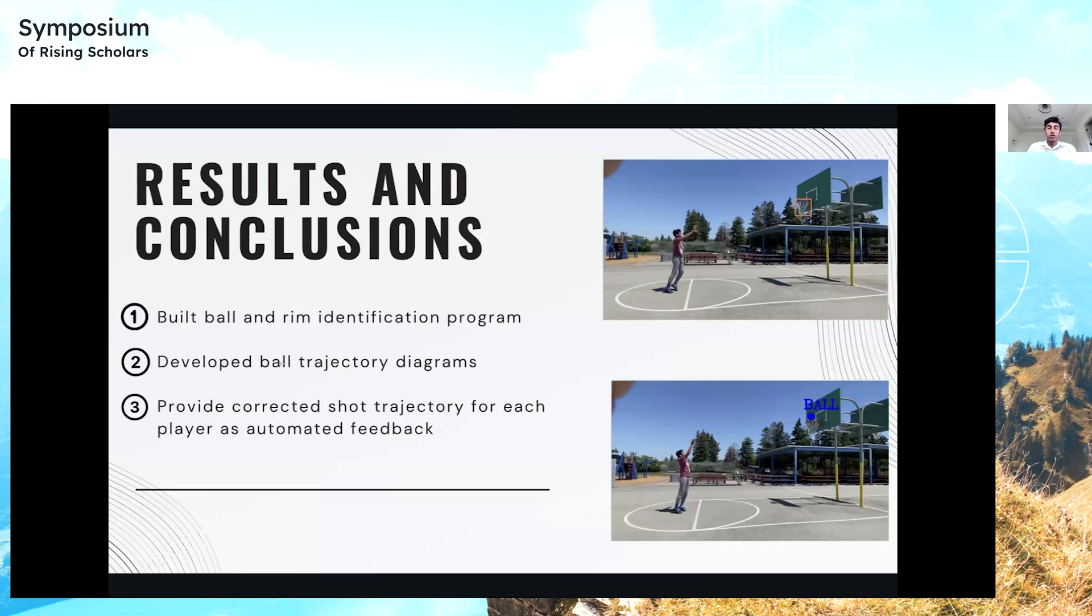Here are the results and conclusions of my study. I first built the ball and rim identification program. Then I developed the ball trajectory diagrams. Lastly, I provided the correct shot trajectory for each player as an automated feedback system.